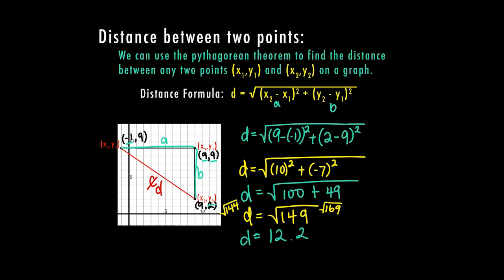And again, this is approximately, it's not exact, so we don't have an equal sign, we just have an approximate sign. So I know this distance here is approximately 12.2 points on the graph.